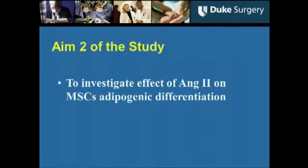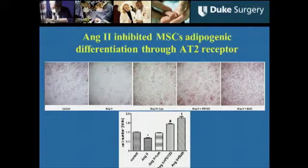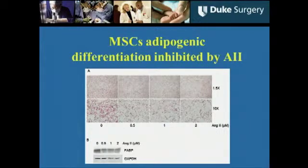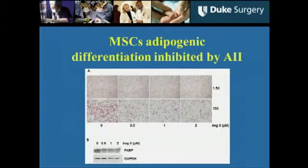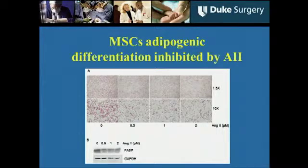The second objective of the study was to investigate the effect of angiotensin II on mesenchymal stem cell adipogenic differentiation. We added different doses of angiotensin II to mesenchymal stem cells, and cell differentiation was significantly inhibited by angiotensin II. In Western blot, the adipose differentiation-specific marker fatty acid binding protein was also significantly inhibited.